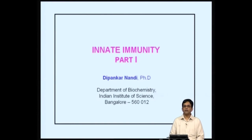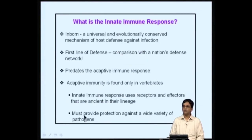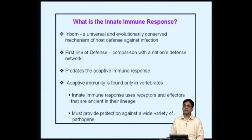Today's lecture is on innate immunity. The immune response can be broadly categorized into the innate immune response and the adaptive immune response. The innate immune response is the first line of defense — 'innate' stands for inborn. It is a universal and evolutionarily conserved mechanism of host defense against infection. The adaptive immune response, on the other hand, is somewhat delayed but is a far more specific response.